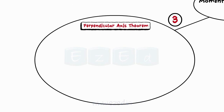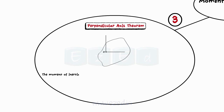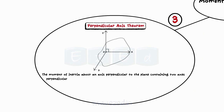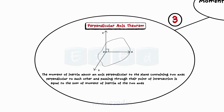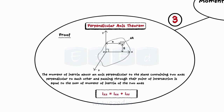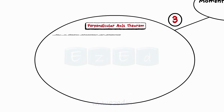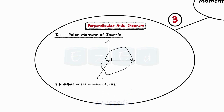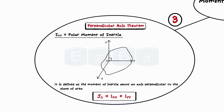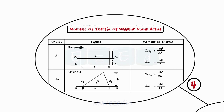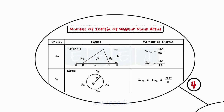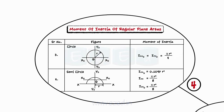Then, we learnt the perpendicular axis theorem: Izz equals Ixx plus Iyy. We also learnt about polar moment of inertia, defined as the moment of inertia about an axis perpendicular to the plane of area, expressed as J₀ equals Ixx plus Iyy. Finally, we learnt about moment of inertia of standard geometric figures — rectangle, triangle, circle, and semicircle — about the centroidal axis. These formulae form the base to find moment of inertia of many composite figures and further calculations, and are essential to further study of moment of inertia.